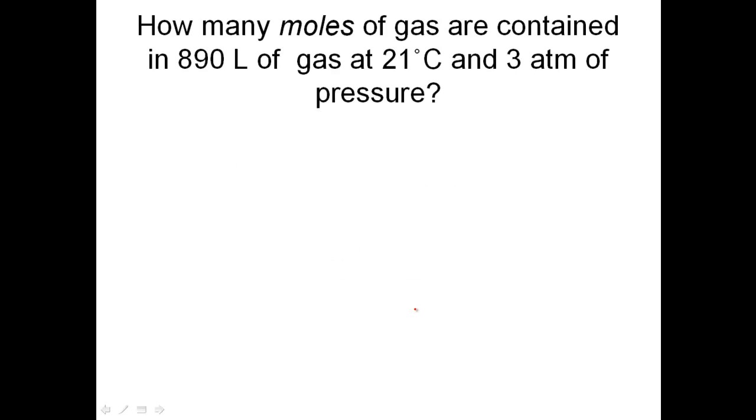The first question asks: how many moles of a gas are contained in 890 liters of gas at 21 degrees Celsius and 3 atmospheres of pressure? One of the key things when you start any one of these problems is to list the variables. If you know the equation is PV equals nRT, let's do P, V, n, R, T.